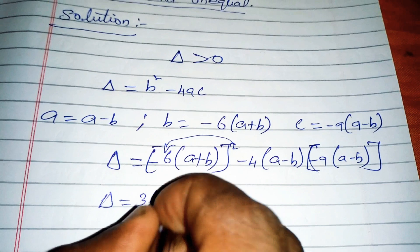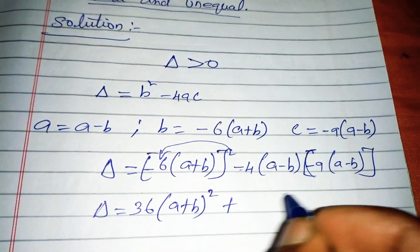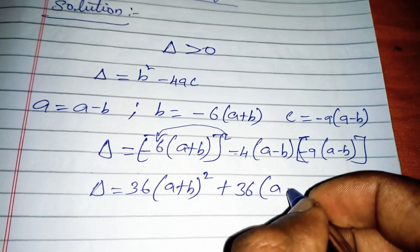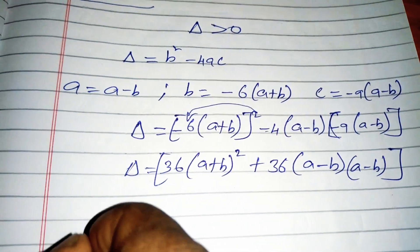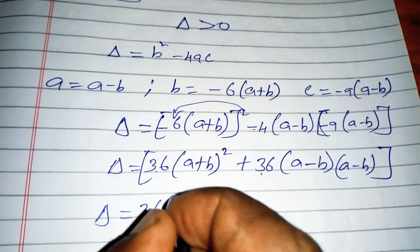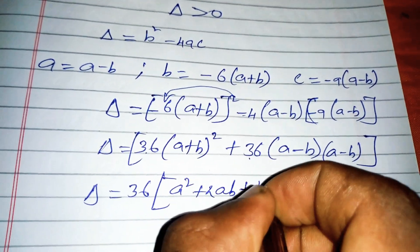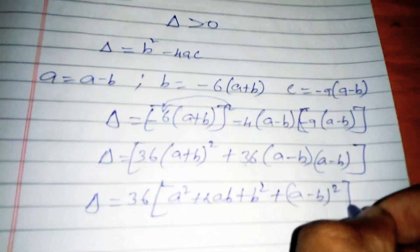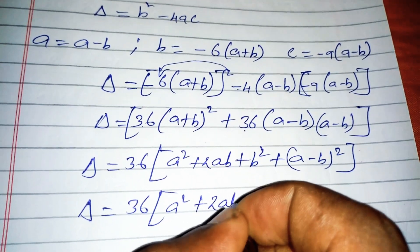Expanding: minus 6 squared equals 36, so we get 36 times (a plus b) squared. The minus times minus gives plus, and 4 times 9 equals 36, so we get plus 36 times (a minus b) squared. Using the identity (a plus b) squared equals a squared plus 2ab plus b squared, and (a minus b) squared equals a squared minus 2ab plus b squared.